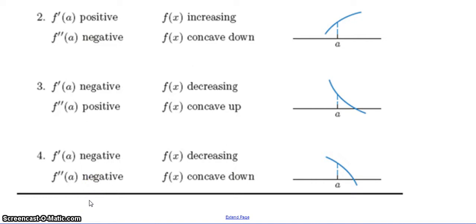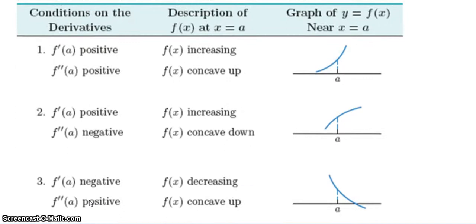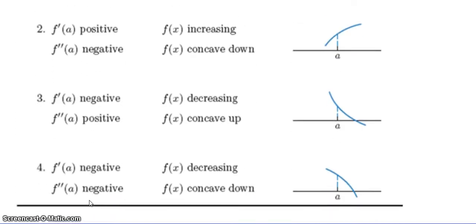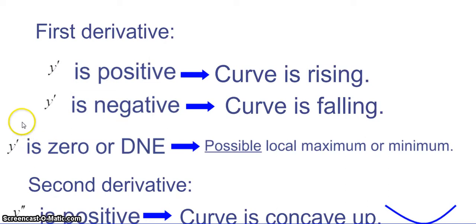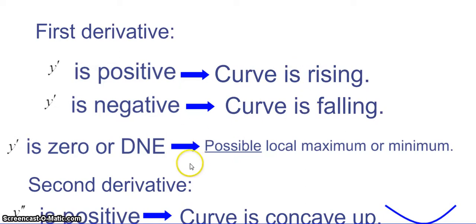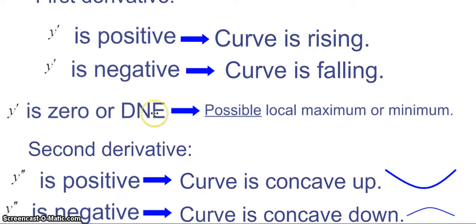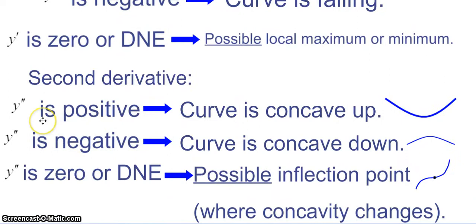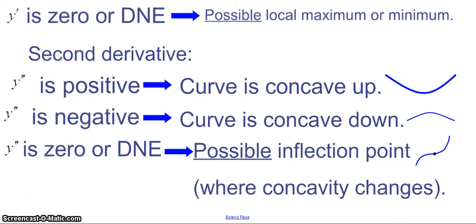None of that is new — it's just thinking about it from the graphical point of view. If the first derivative is positive, the curve is rising. If negative, the curve is falling. If the first derivative is zero or does not exist, that's a possible local maximum or minimum. For the second derivative: positive means concave up, negative means concave down. If the second derivative is zero or does not exist, this is a possible inflection point — where concavity changes.